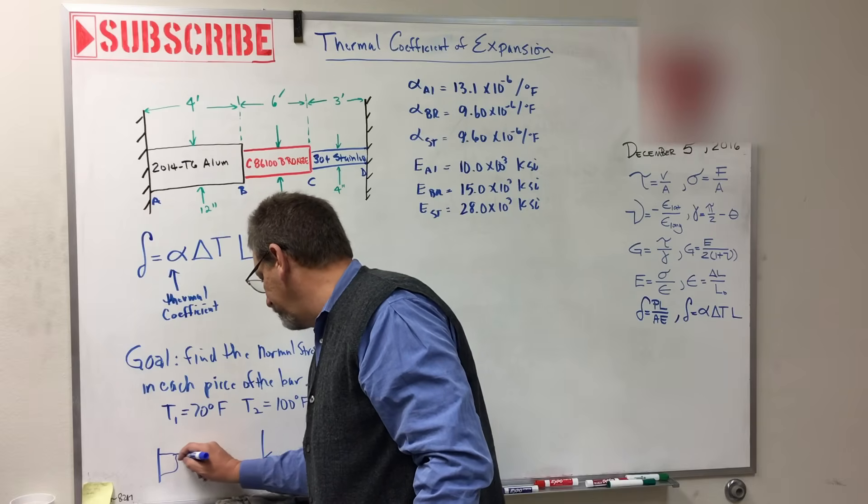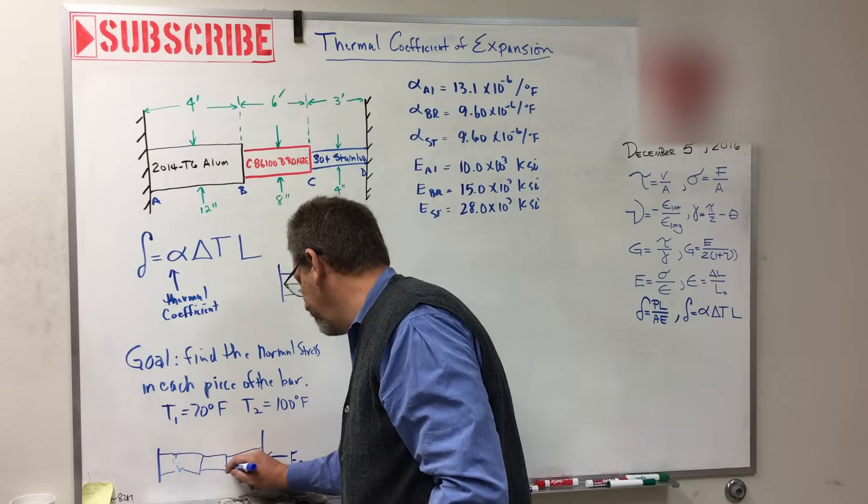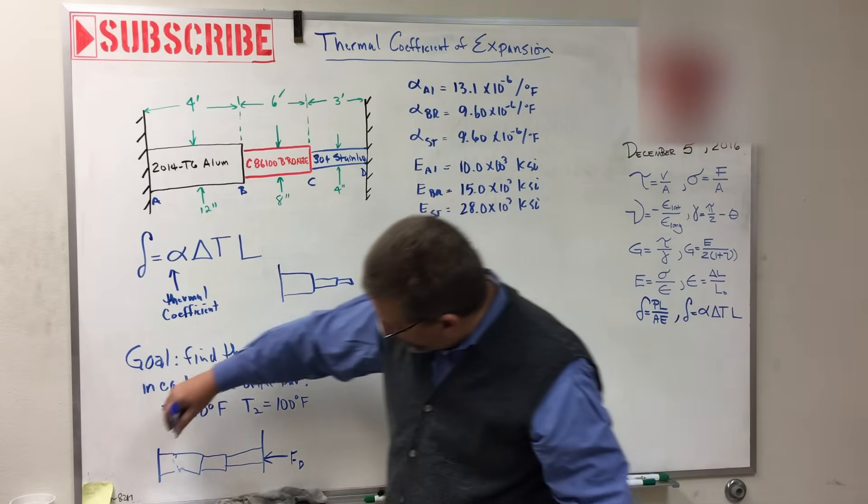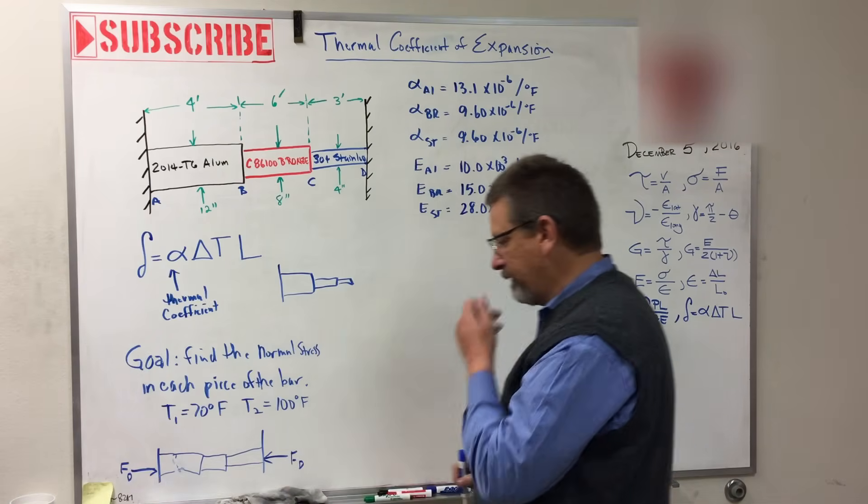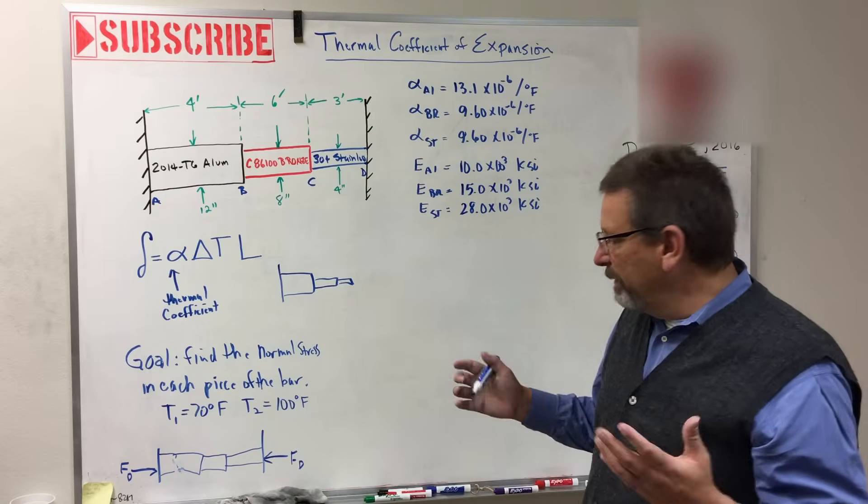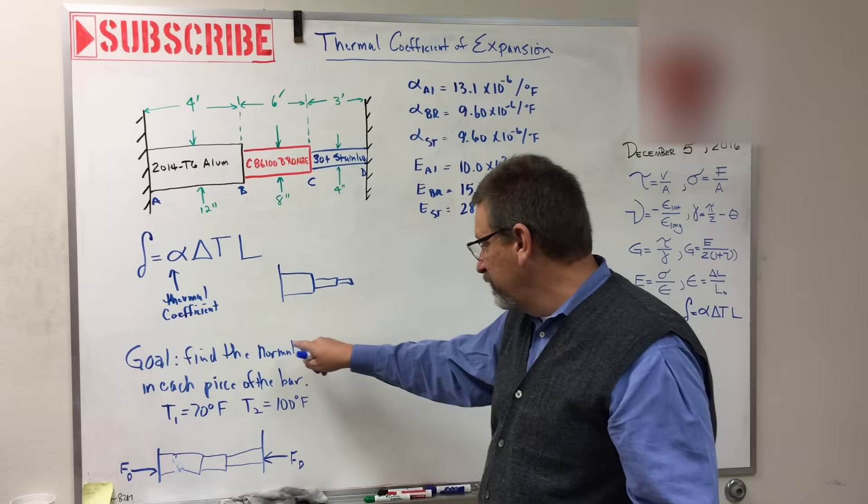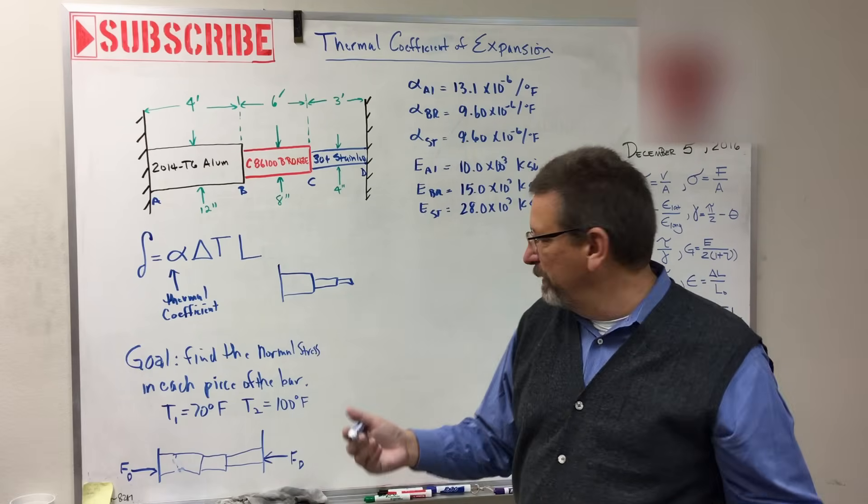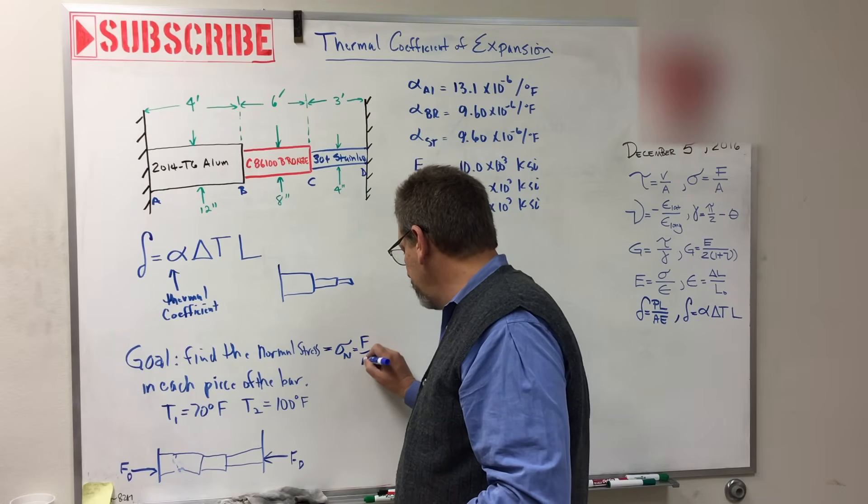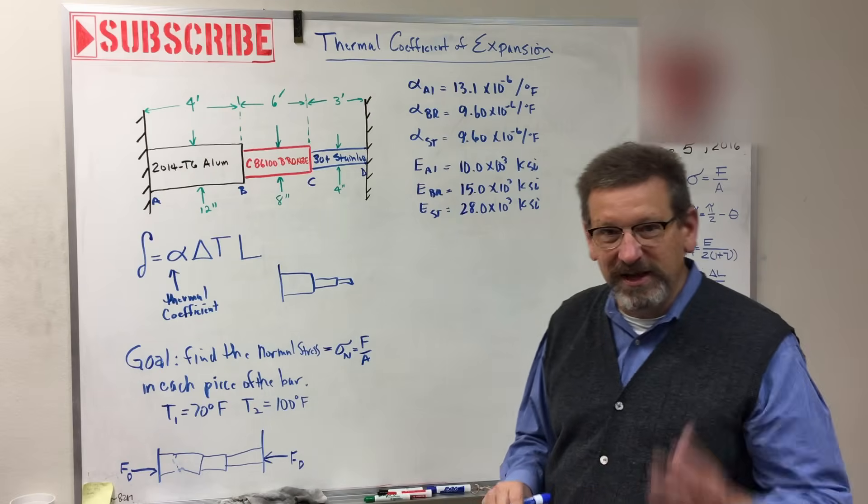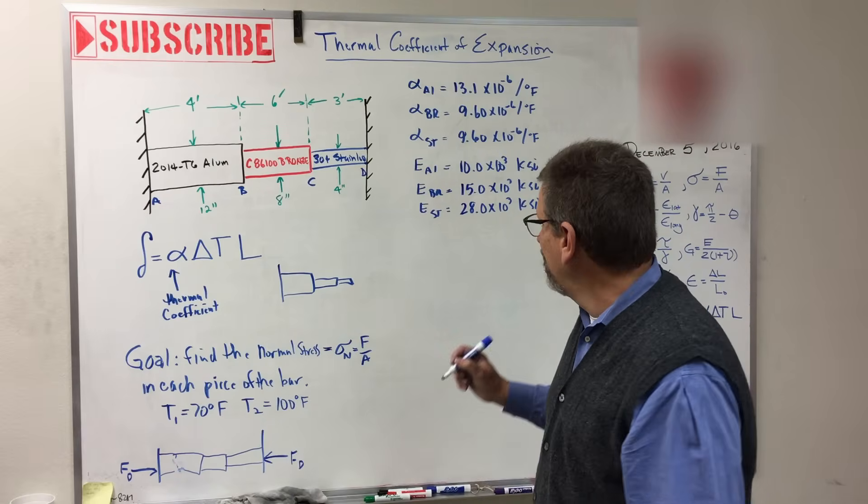So the way we work it, we're going to let it expand, and then we're going to push it back to where it goes. So if FD pushes that way, what has to push this way? FD. So what I'm looking for is this force right here, because at the end of the problem, we're going to need that force to find the normal stress. What's normal stress? That's sigma normal, which is just the force over the area. Okay, let's let this thing expand, and let's see what's going on. Let's calculate some deltas.